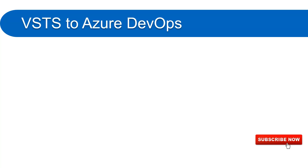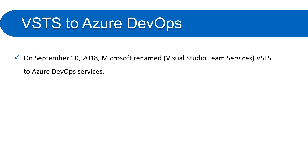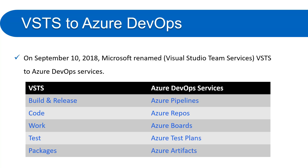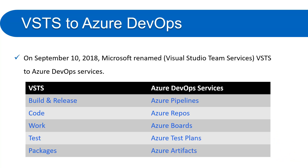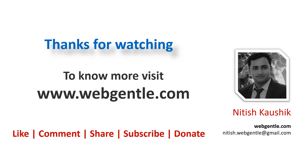Now let's look at the relationship between VSTS and Azure DevOps. On September 10, 2018, Microsoft renamed VSTS — Visual Studio Team Services — to Azure DevOps Services. The features have been renamed as follows: Build and Release is now Azure Pipelines; Code is now Azure Repos; Work is now Azure Boards; Test is now Azure Test Plans; and Packages is now Azure Artifacts.